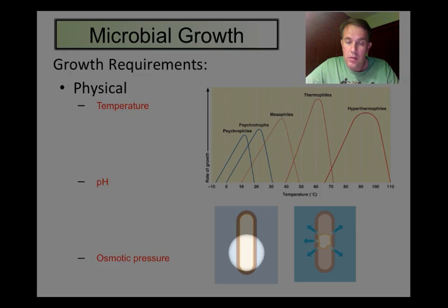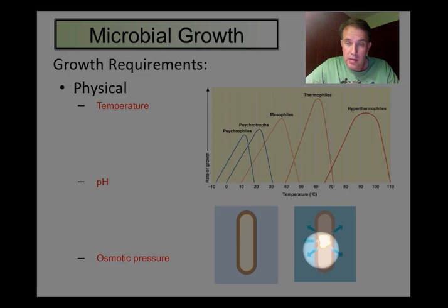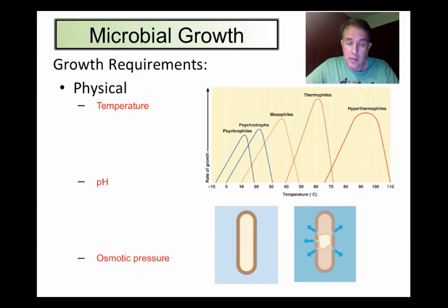The cell wall, which is fairly rigid in a bacterium as we saw in the last lesson, means that as the water leaves the cell, the cell membrane actually shrivels and pulls away from the inside of the cell, which can be seen here in this diagram. Here's the inside of the cell membrane pulling away from the cell wall. This actually inhibits the growth of the cells significantly.